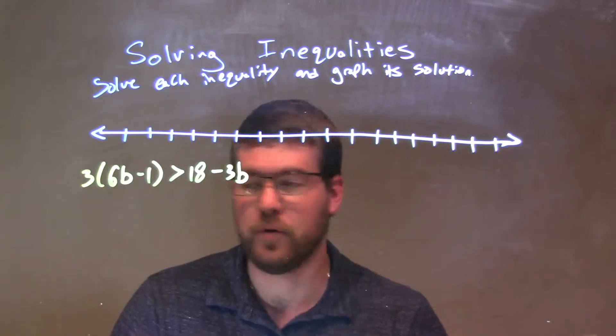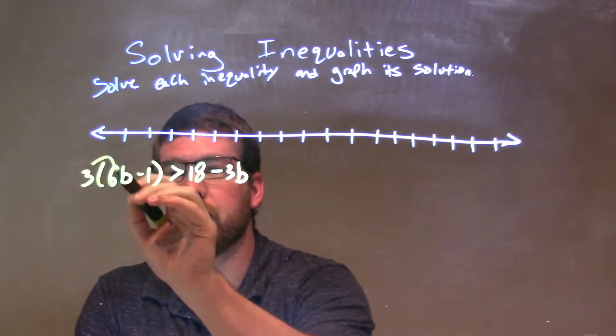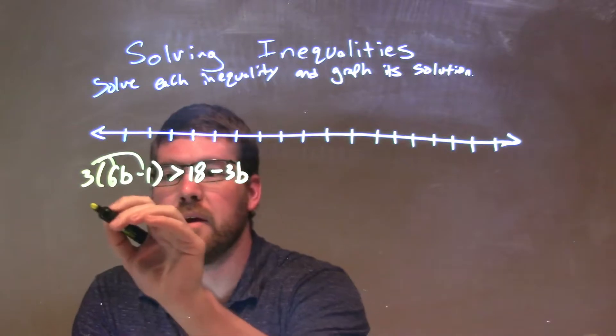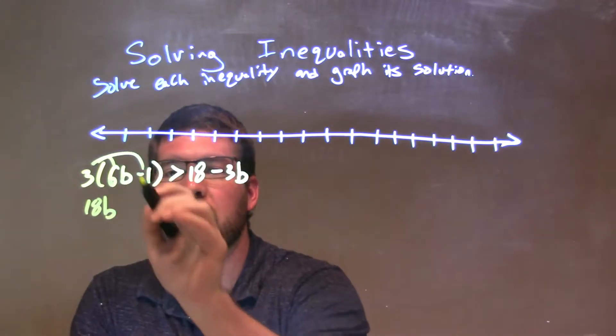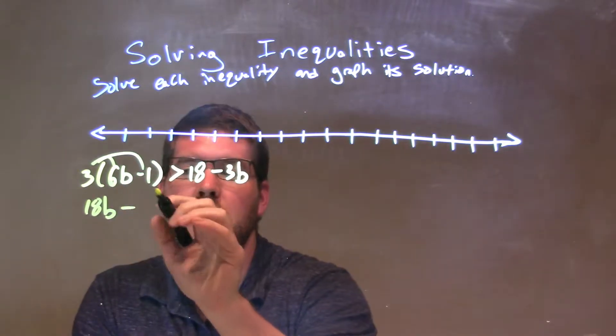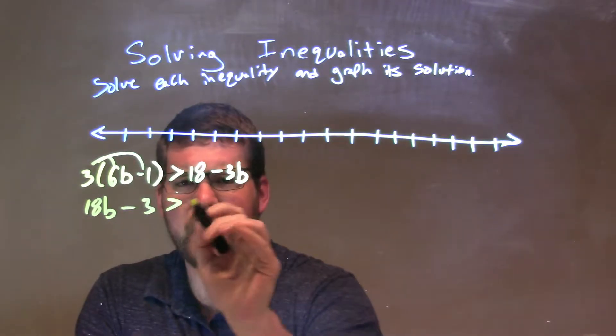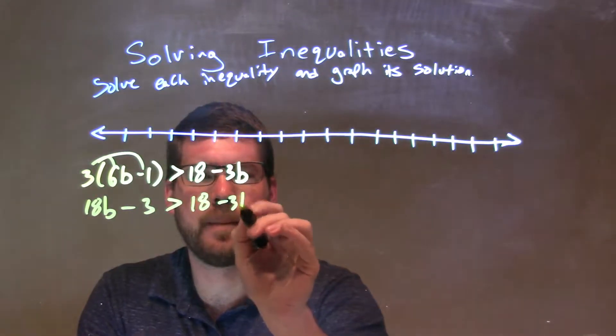So what I'm going to do first is I'm going to distribute the 3 across in the parentheses. 3 times 6b is 18b, and 3 times 1, minus there, is a 3, so minus 3. And that's greater than 18 minus 3b.